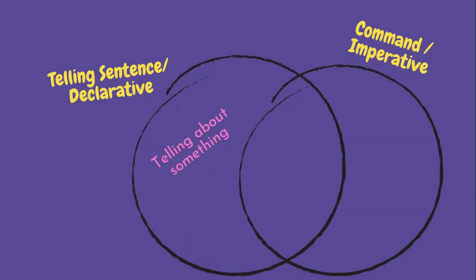Telling sentence is a sentence that is actually just telling about something. But command is asking someone to do something. They have two things in common. They begin with capital letter and they both end with period.